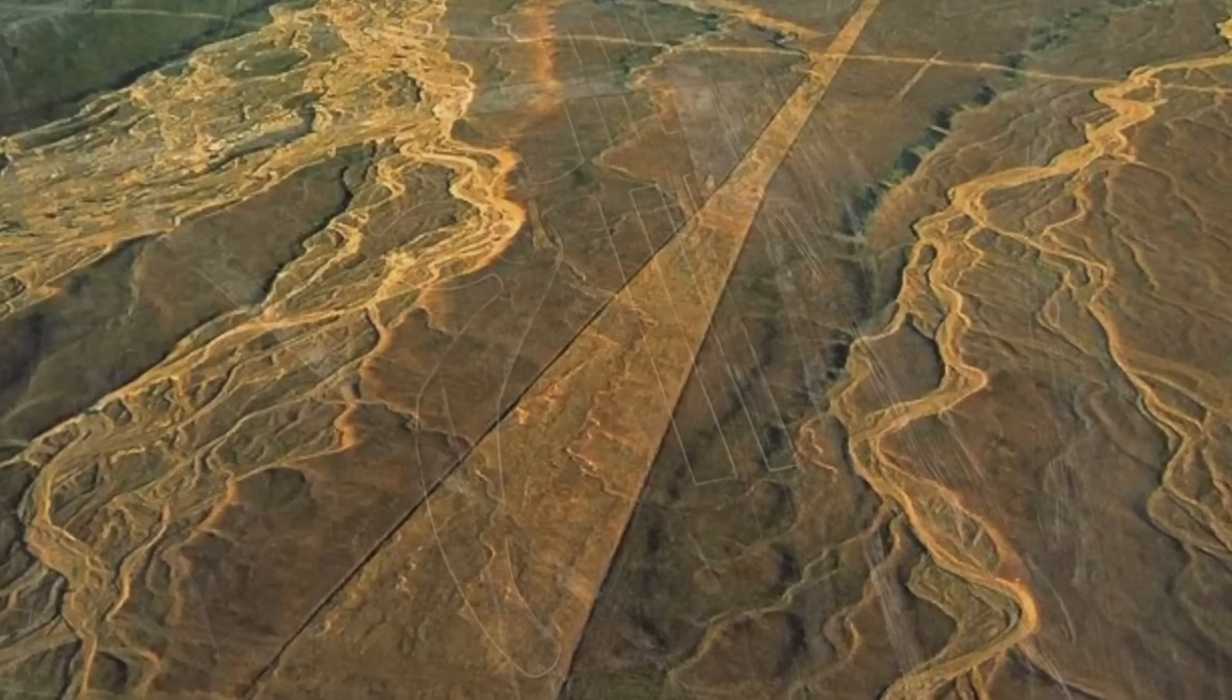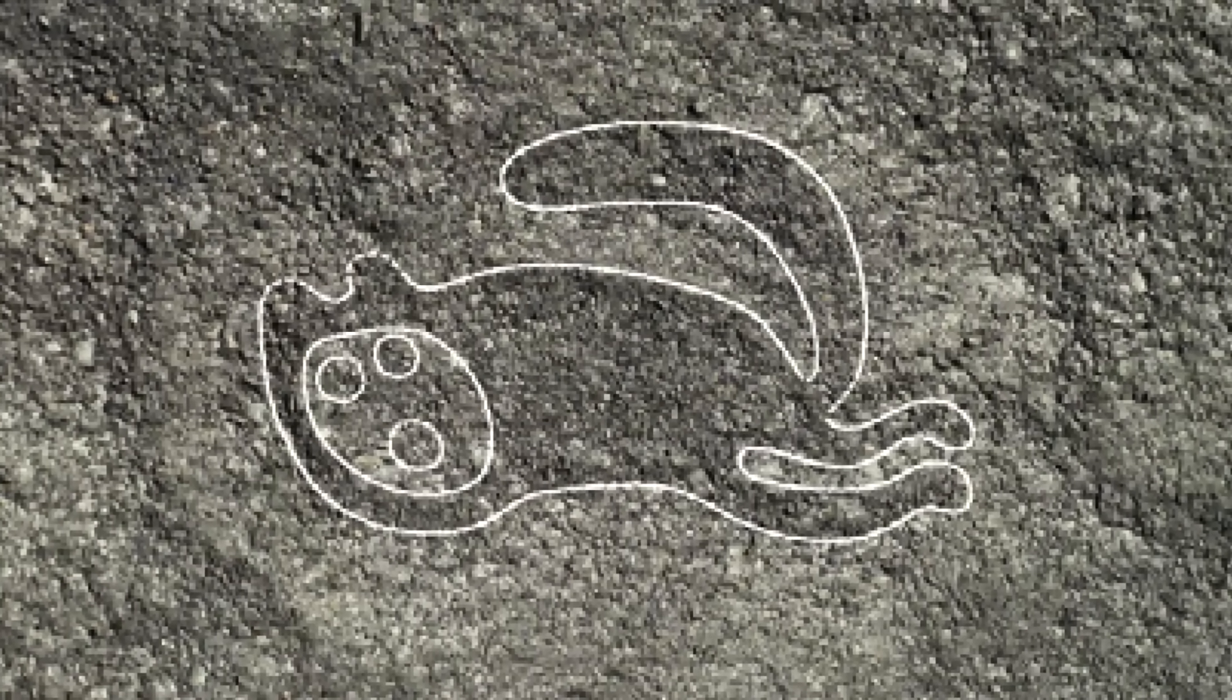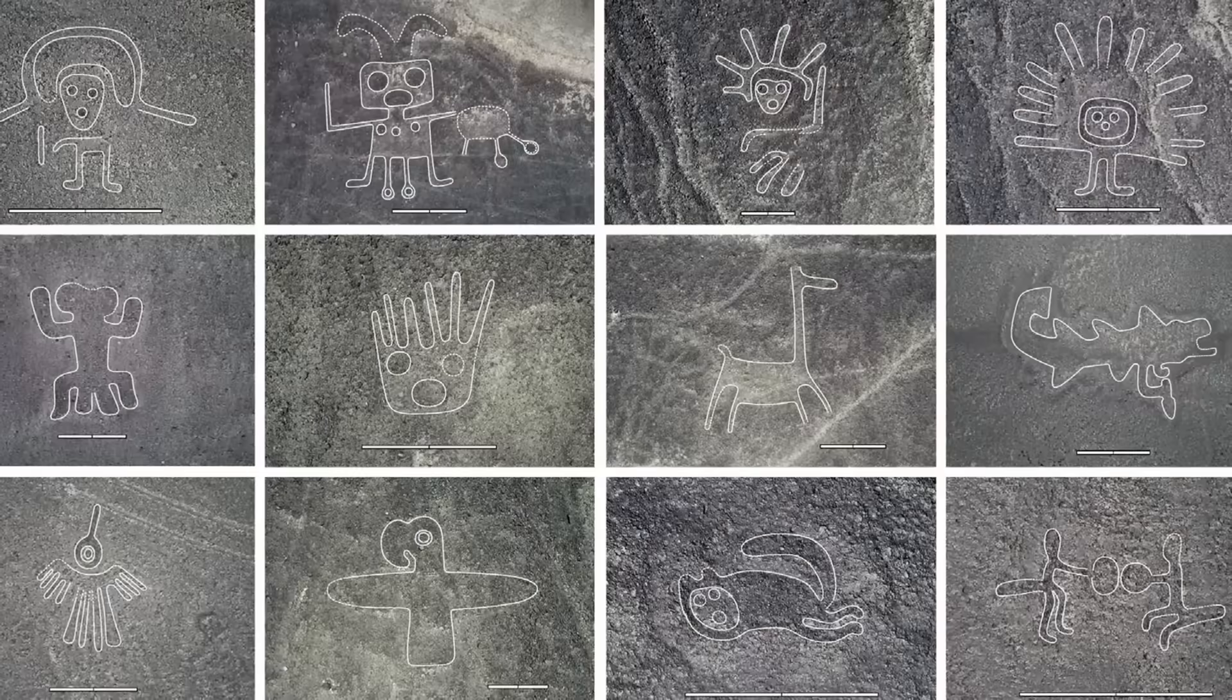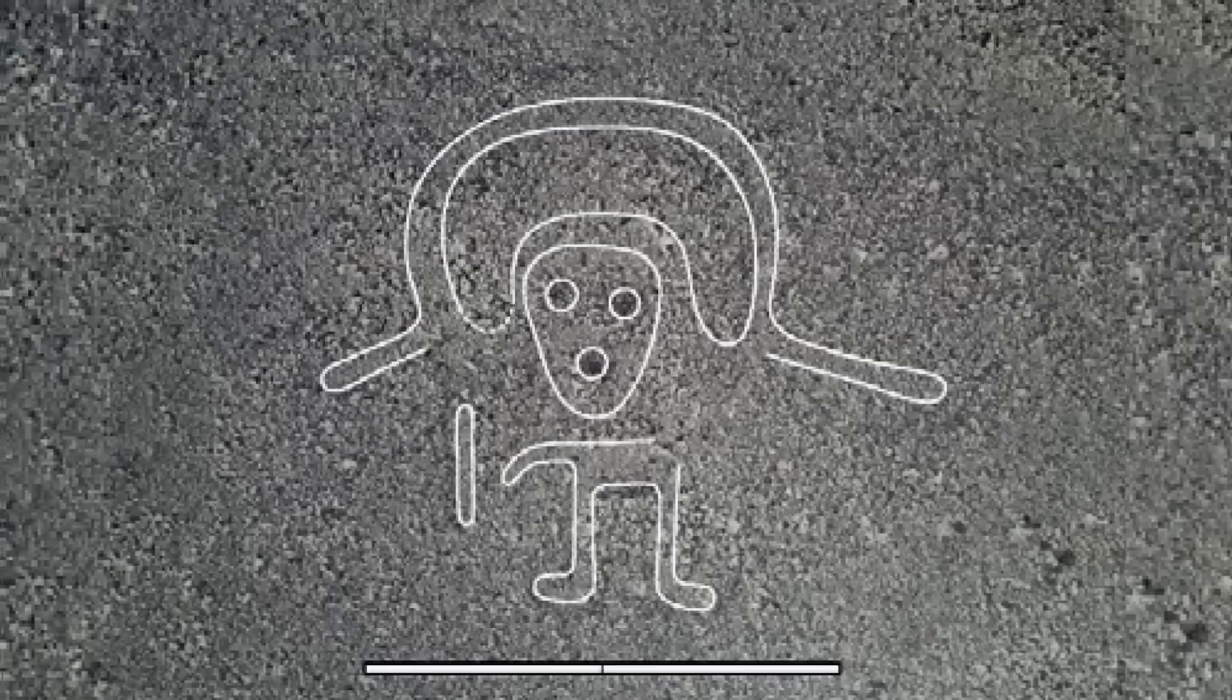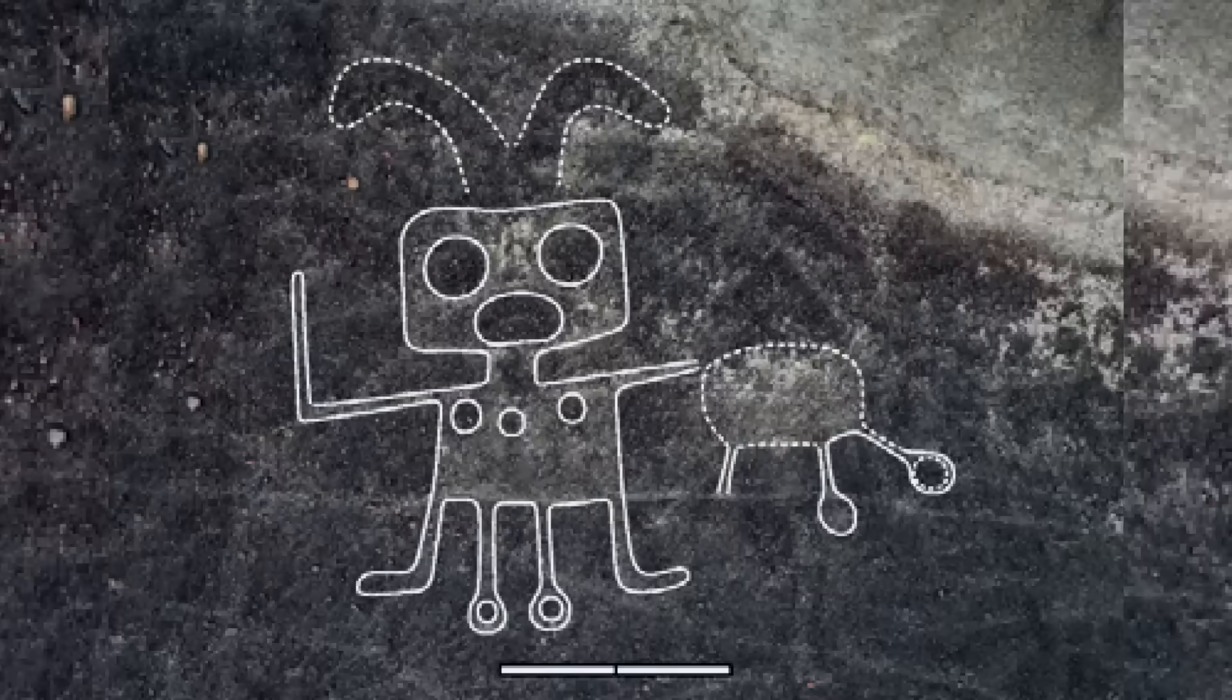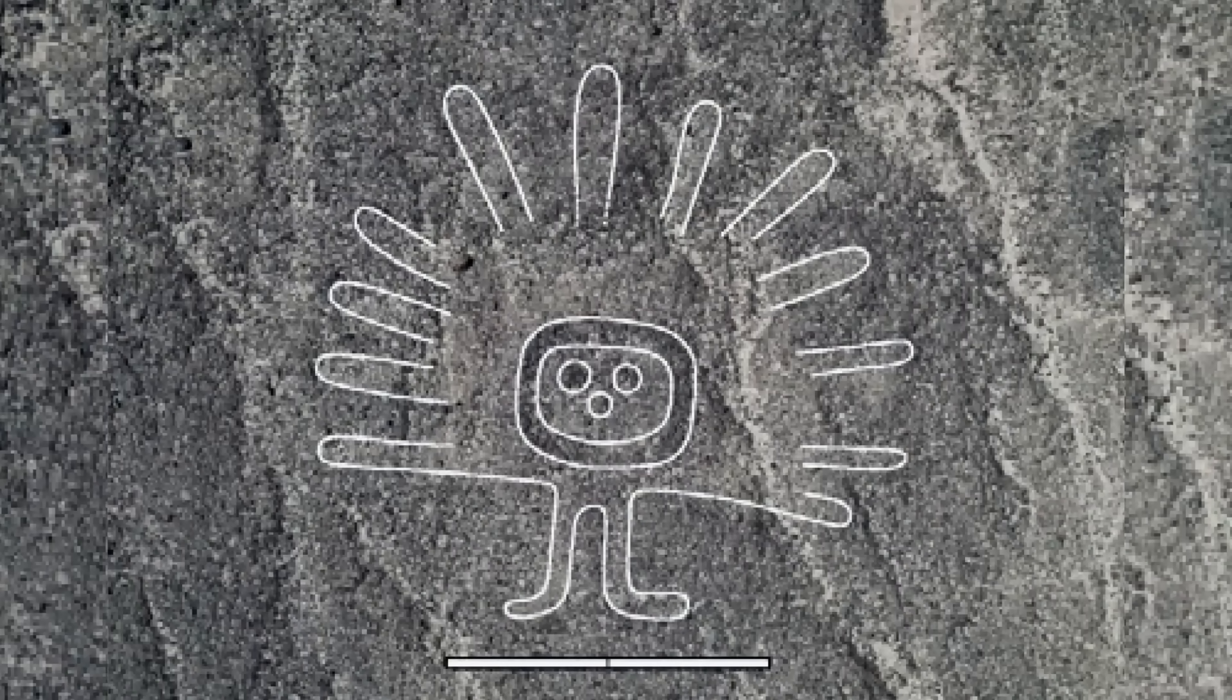Many of the newly discovered figures are too faint for the human eye to spot from above, but AI image recognition models could detect subtle patterns in terrain texture and color contrast. This fusion of archaeology and artificial intelligence is giving us a clearer picture of how ancient civilizations expressed art on a monumental scale.